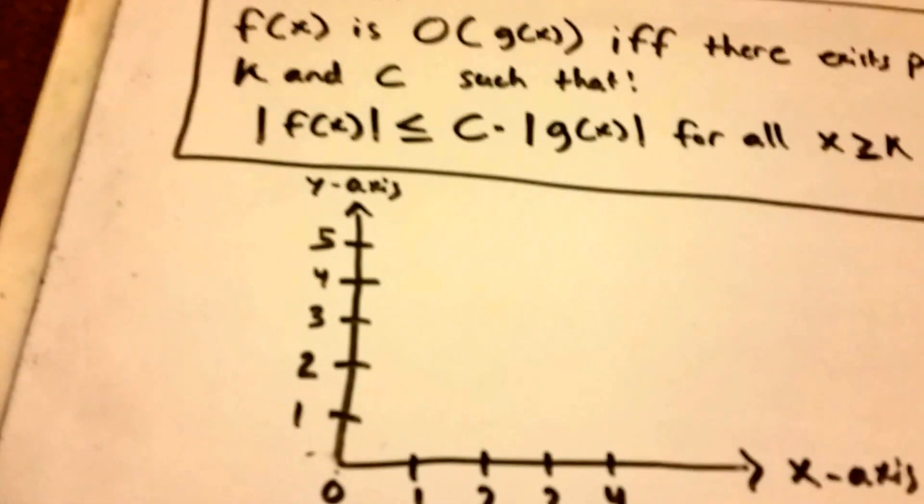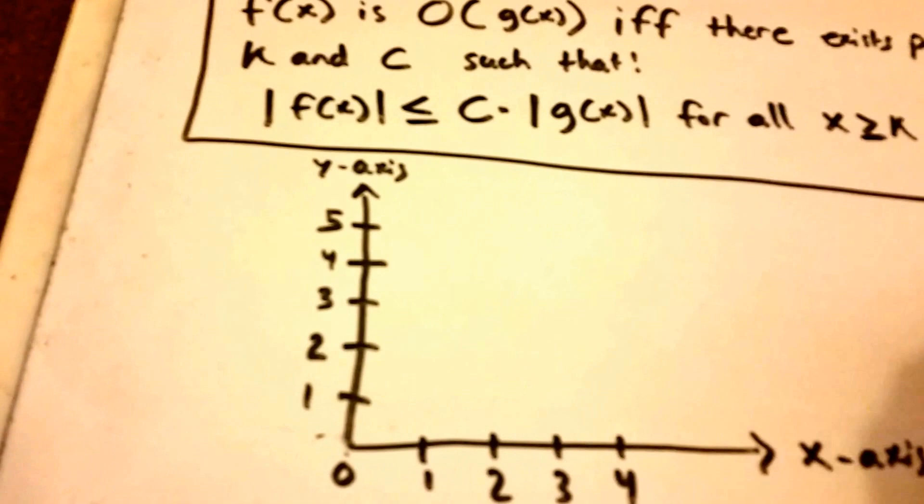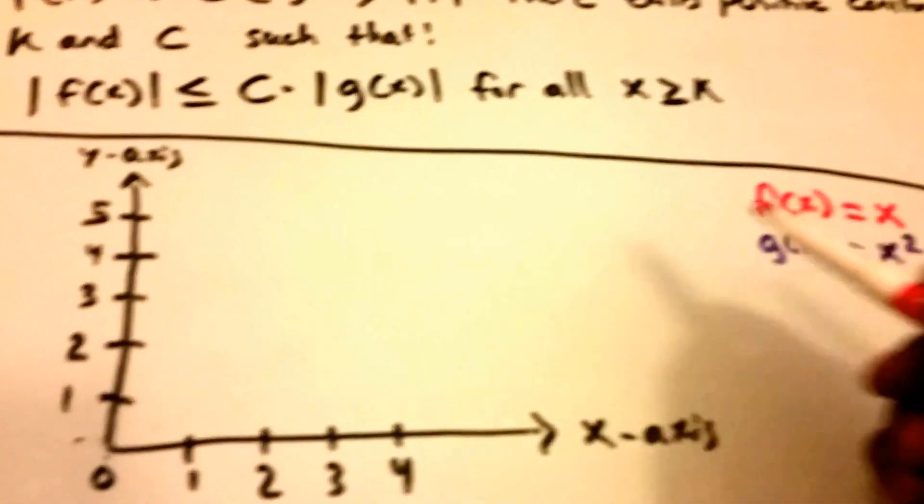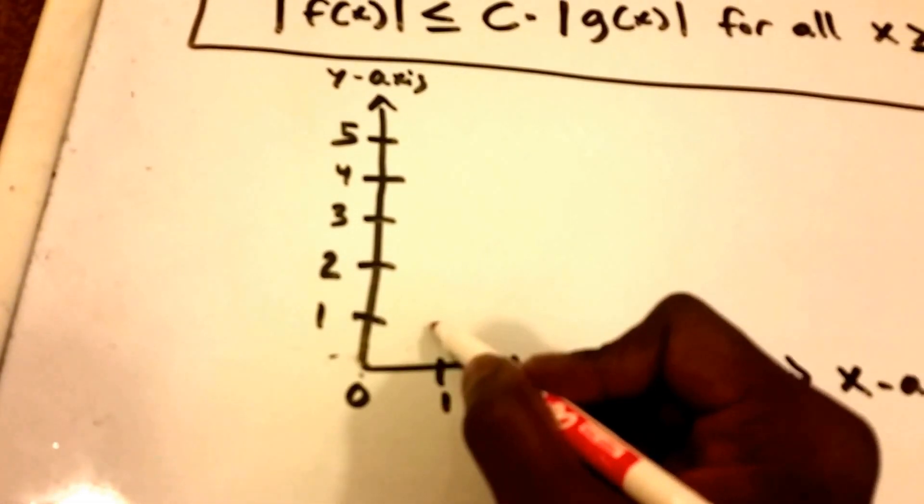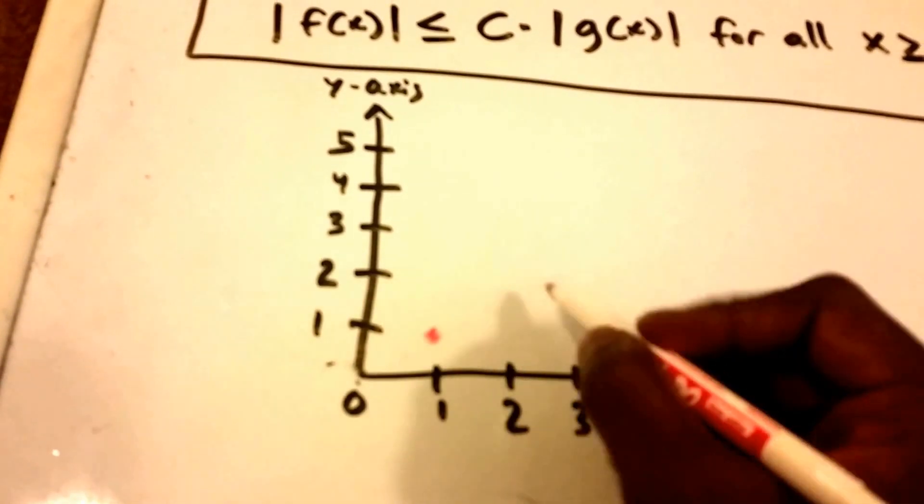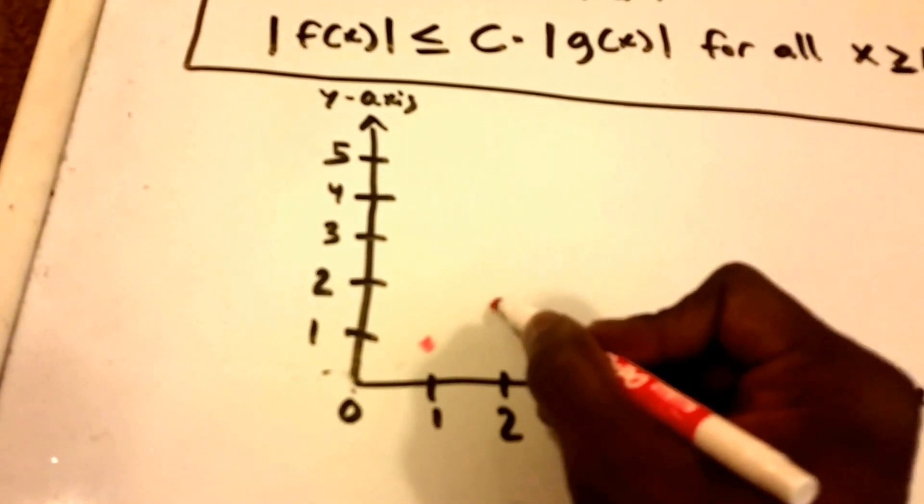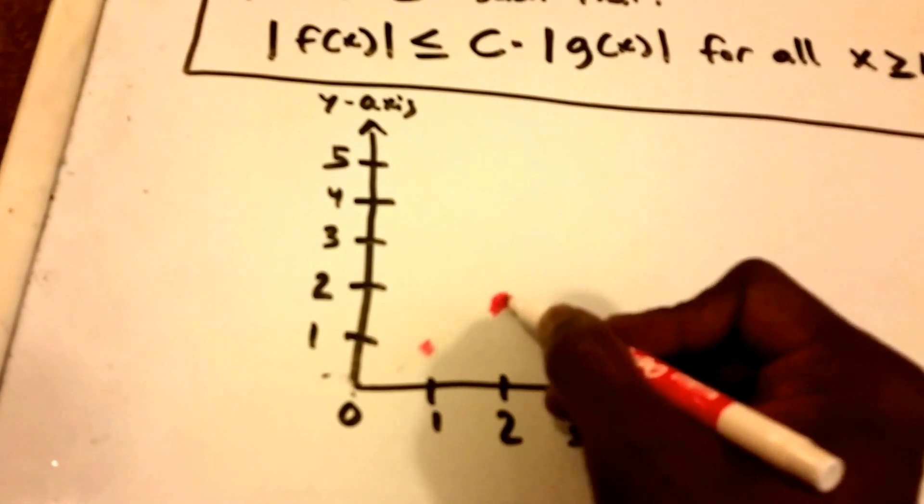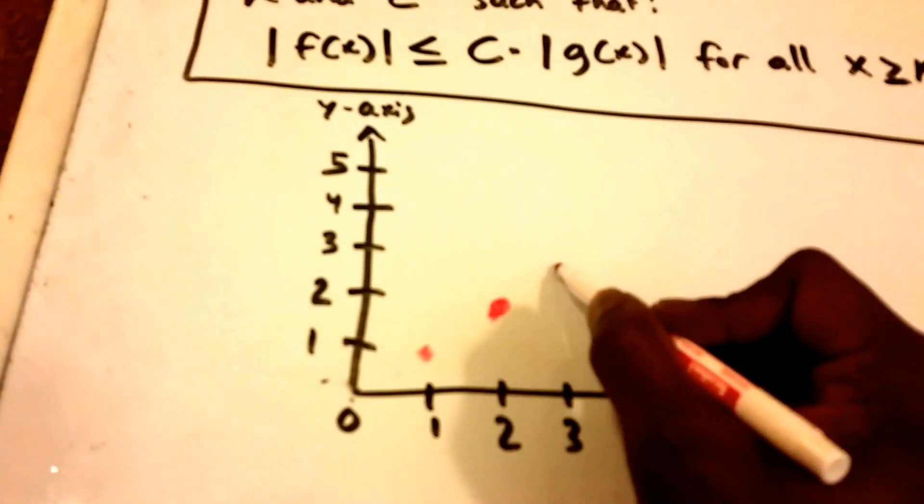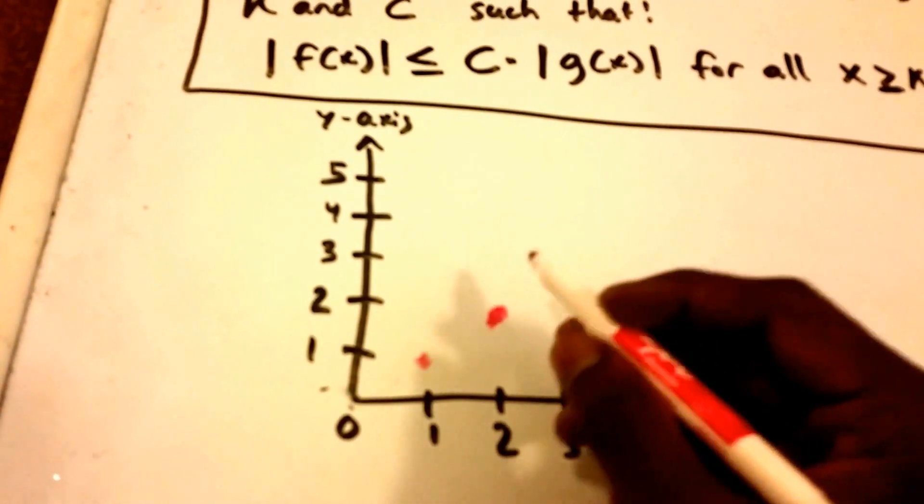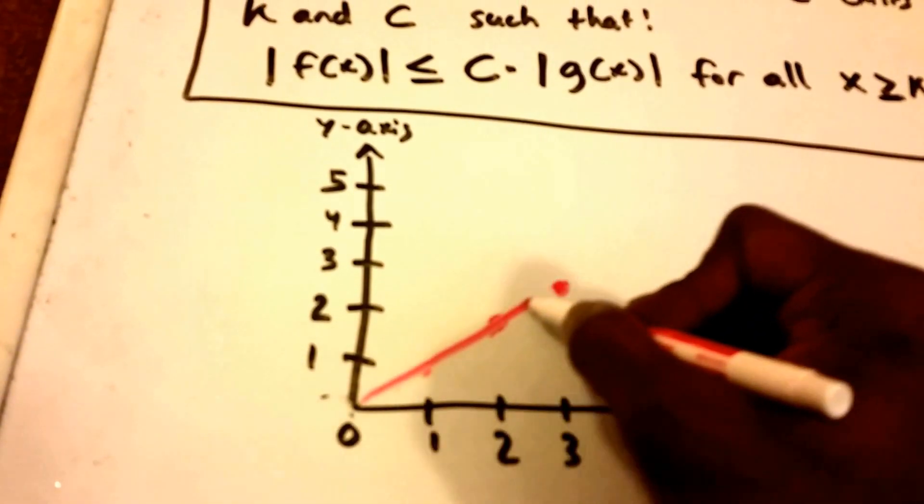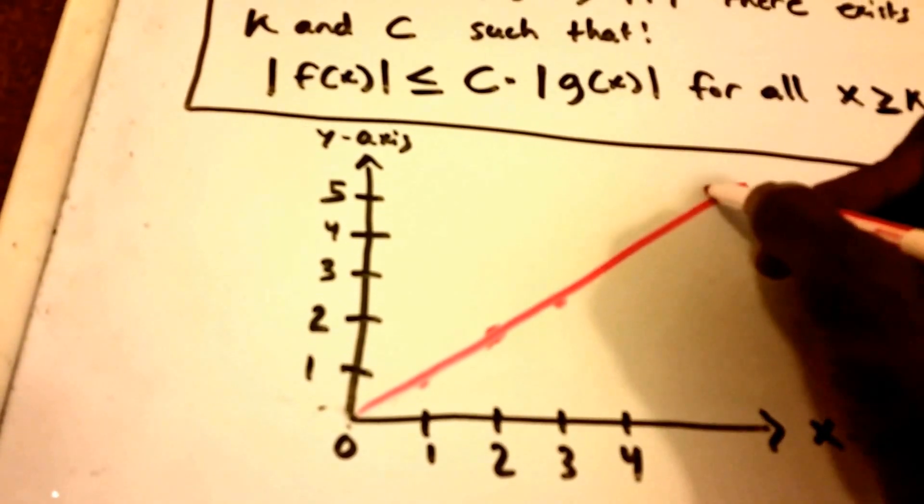Okay, so let me go ahead and graph f of X which is just equal to X here. So that means when X equals one, Y equals one, so put a little dot there. When X equals two, Y equals two, maybe it's probably like up here. When X equals three, Y equals three. And we can see it basically looks like that there.